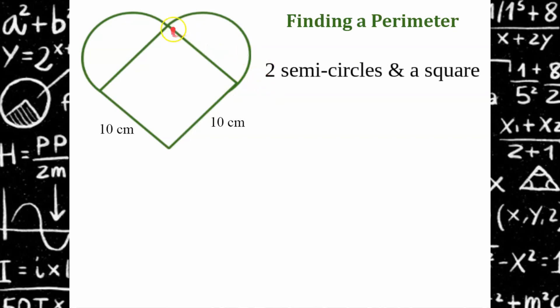Welcome back. So we have two semicircles, one semicircle, a second semicircle, making a full circle, and a square.